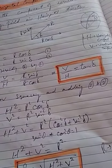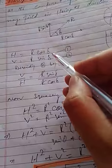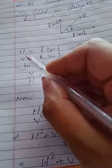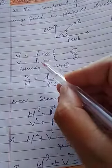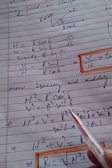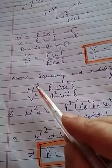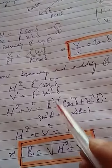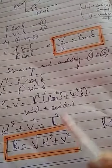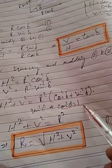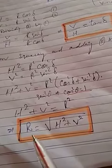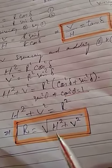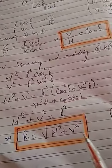Now we will square and add equations one and two. Squaring equation one: H² = R² cos² δ. Squaring equation two: V² = R² sin² δ. Adding them: H² + V² = R² (cos² δ + sin² δ), which equals R² × 1. Therefore H² + V² = R², and R equals the square root of H² + V².